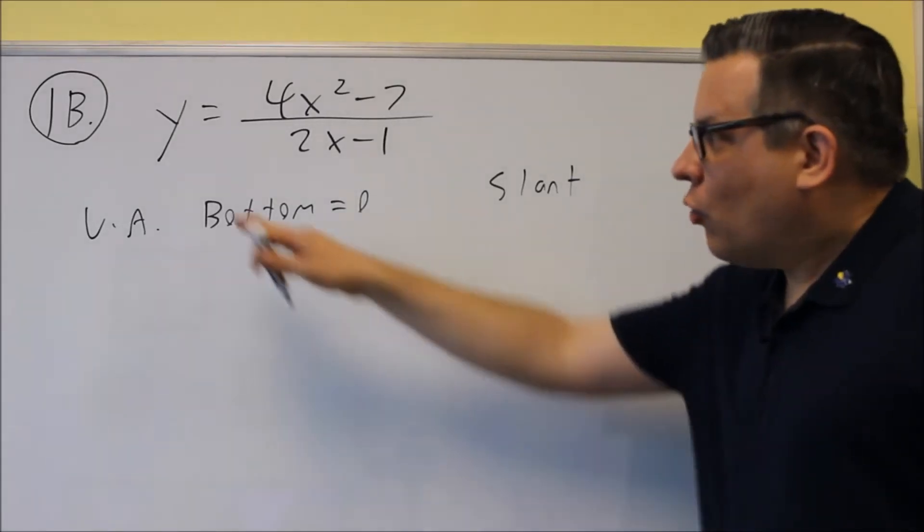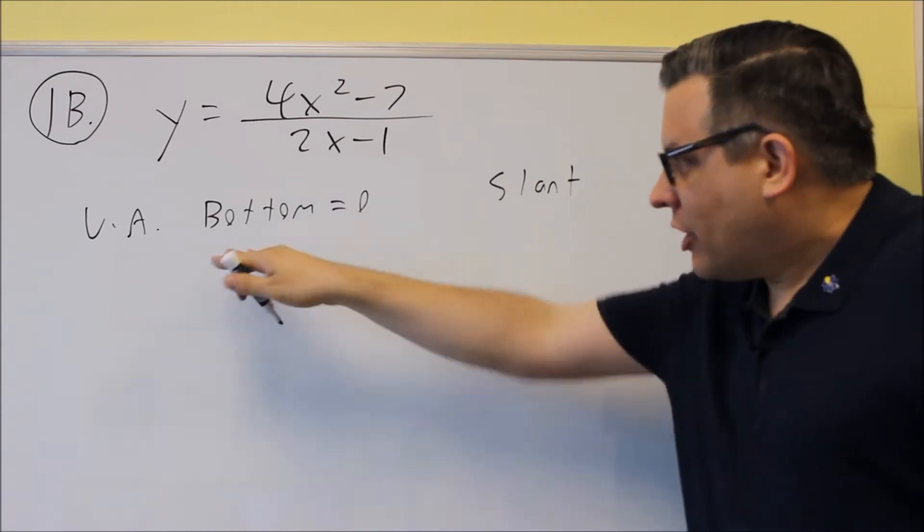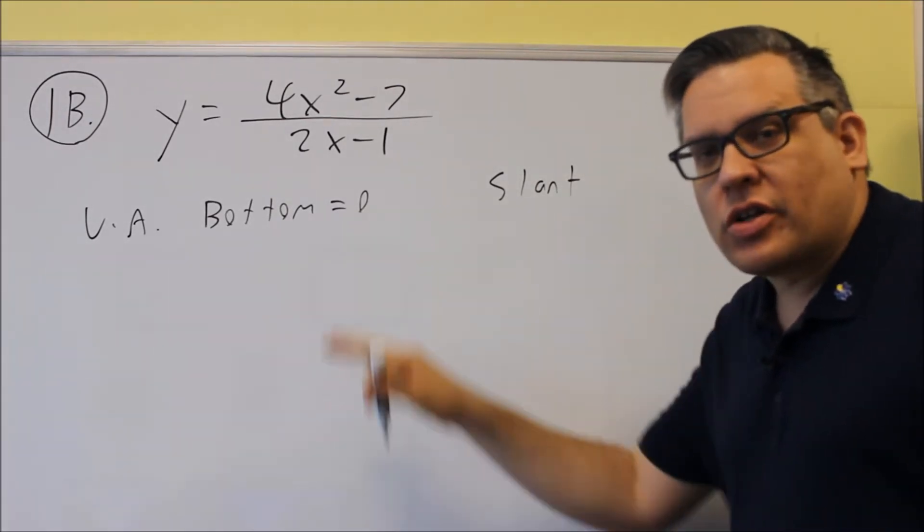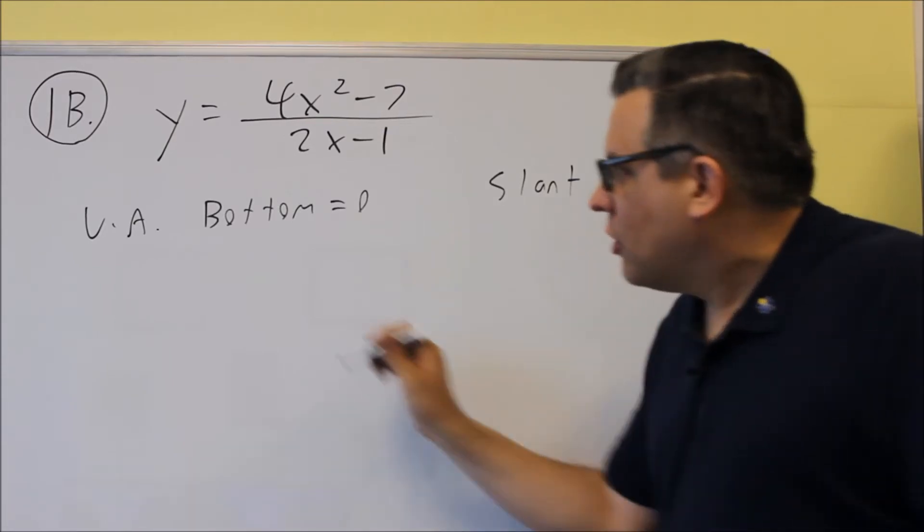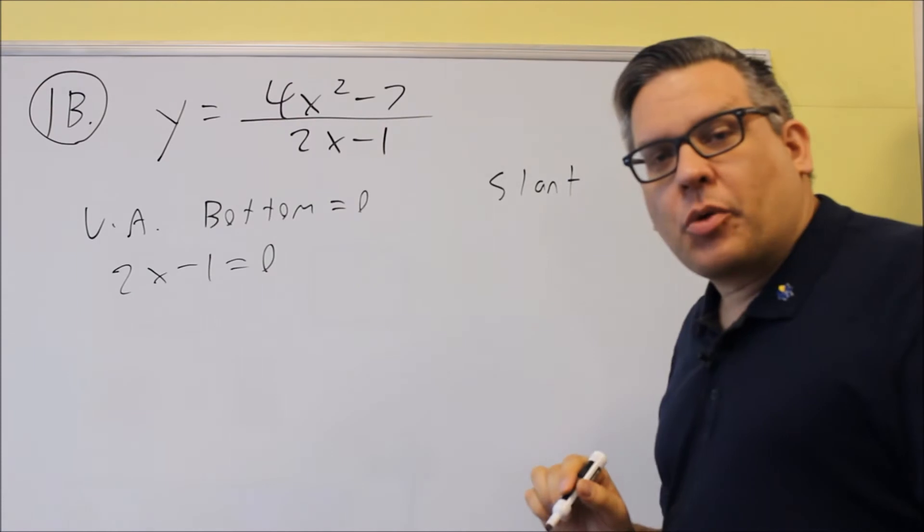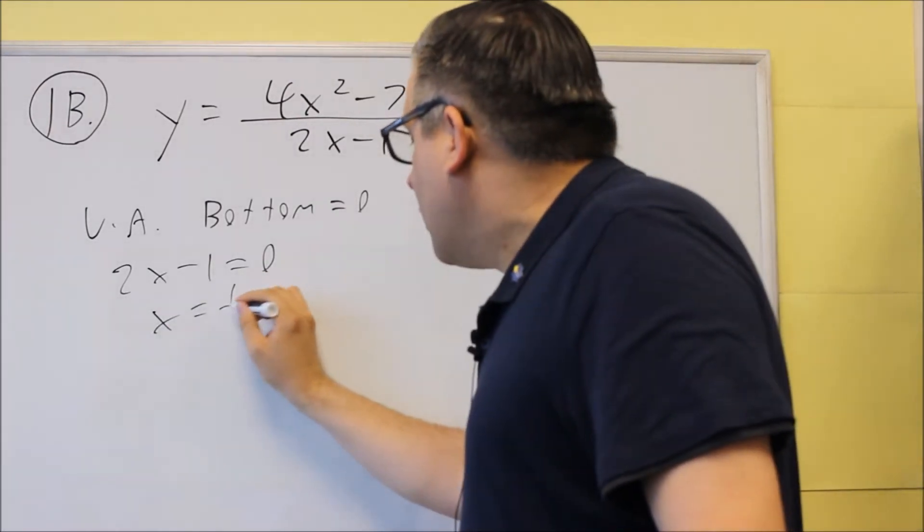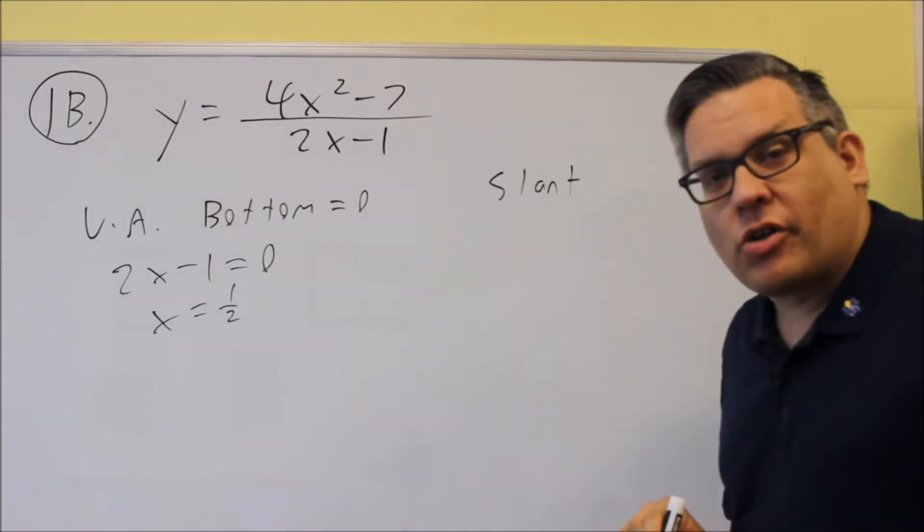Okay, next, for problem 1b, we're doing the same process here. So again, for the vertical asymptote, you want to set the bottom equal to 0 always to find the vertical asymptote. So we're going to do 2x minus 1 equals 0, and we're going to solve for that. And when we solve, we get x is equal to 1 half. Remember to put x equals as part of your answer.